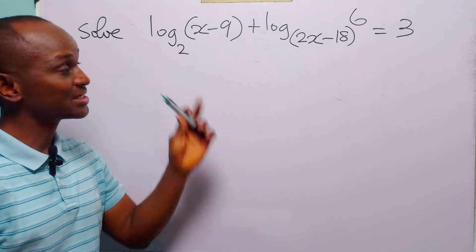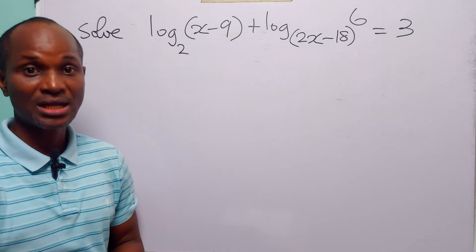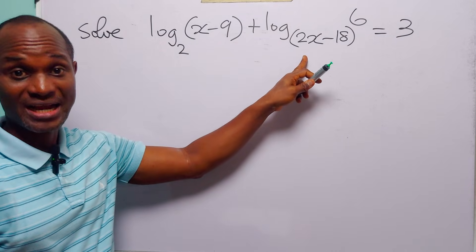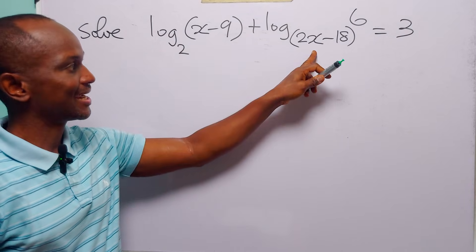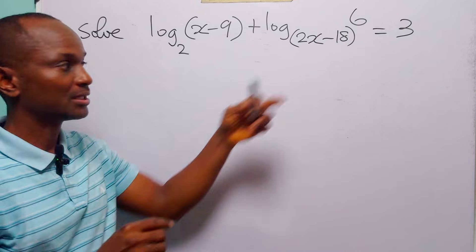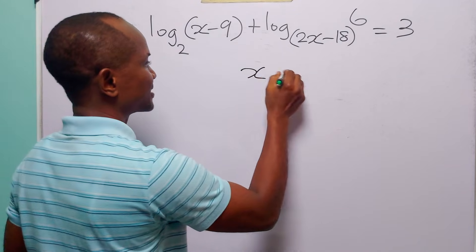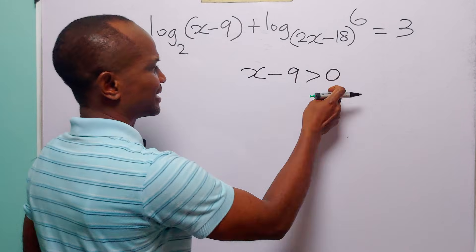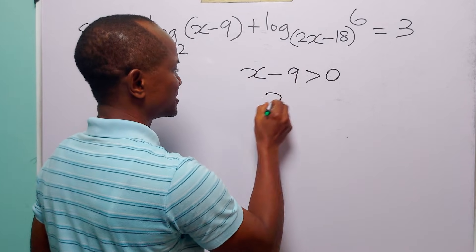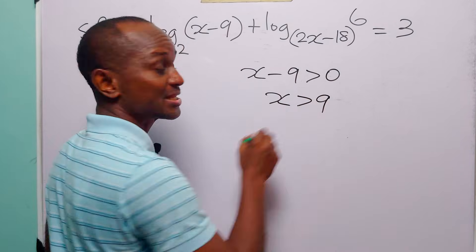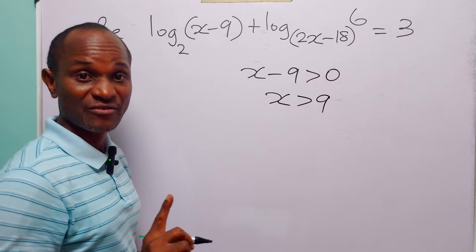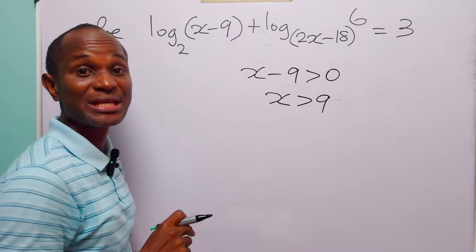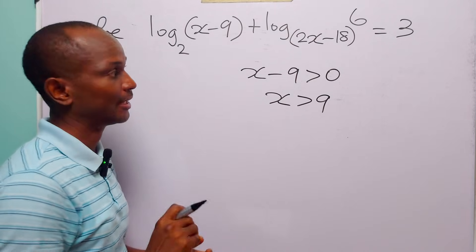Hello and welcome. Before we start solving this logarithmic equation, let us recall that for these two log terms to be defined, x minus 9 must be positive. That is, x minus 9 must be greater than 0. When you add 9 to both sides of this inequality, we have that x must be greater than 9. So whatever values of x we calculate as solutions to this logarithmic equation must be greater than 9.